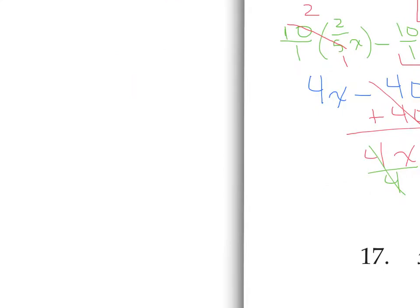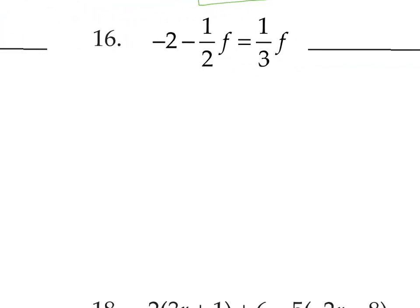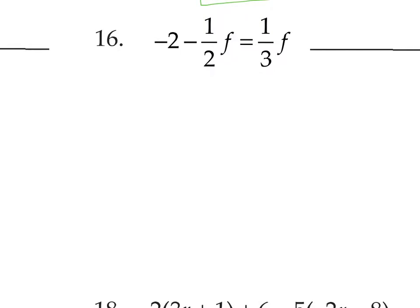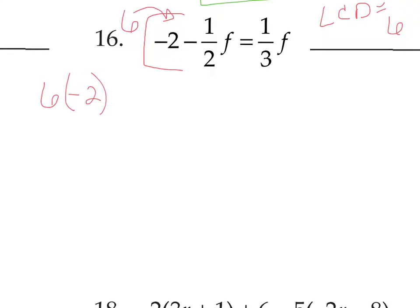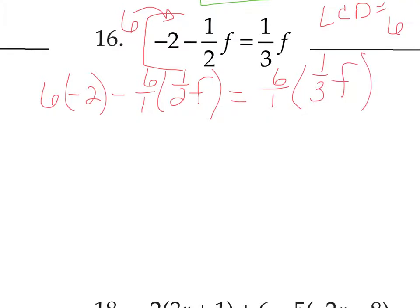Let's go to number 16 — more fractions. We're going to clear fractions. The least common denominator of 2 and 3 is 6. So multiply the entire equation by 6 using distributive property: 6 times negative 2, minus 6 over 1 times 1 half f, equals 6 over 1 times 1 third f. Every term times 6. No canceling with whole numbers, but 2 cancels with 6 to make 3, and 3 cancels with 6 to make 2.